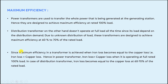Maximum efficiency in a transformer is achieved when iron losses become equal to copper losses. In power transformers, iron losses equal copper losses when operating at full rated 100% load. In distribution transformers, iron losses become equal to copper losses at 60 to 70% of the rated load, since they are designed to achieve maximum efficiency at that point.